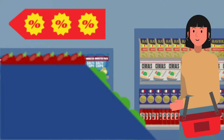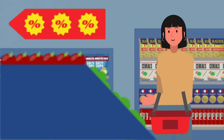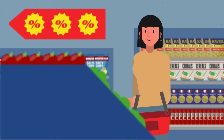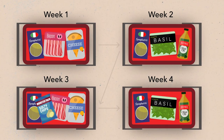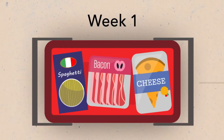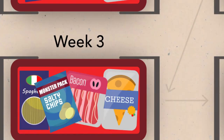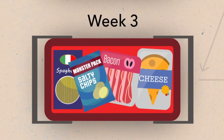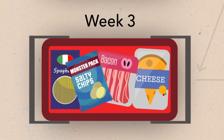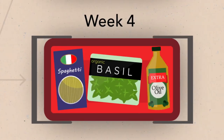Here's an example. Petra goes to the supermarket once a week. There are four baskets from the past four weeks. Week 1: spaghetti, bacon, and cheese. Week 2: spaghetti, basil, and olive oil. Week 3: spaghetti, bacon, cheese, and chips. Week 4: spaghetti, basil, and olive oil.